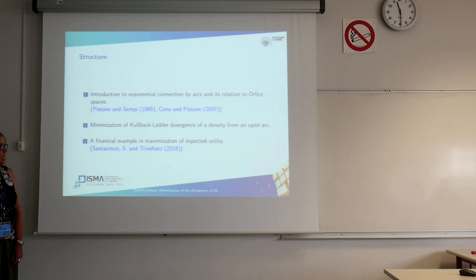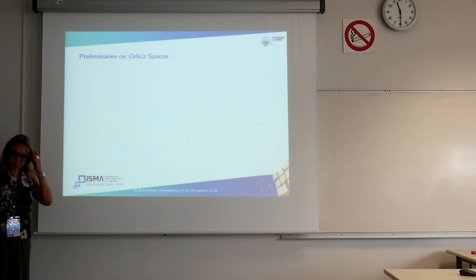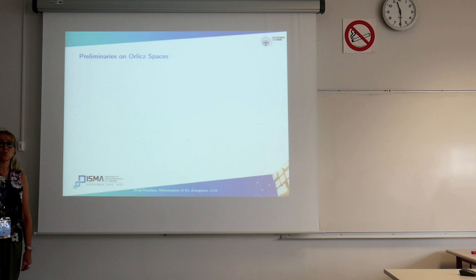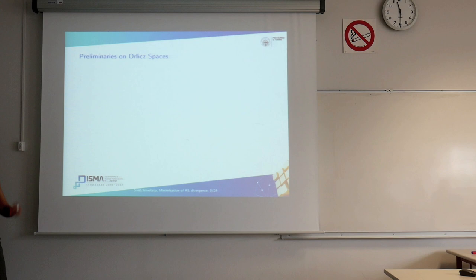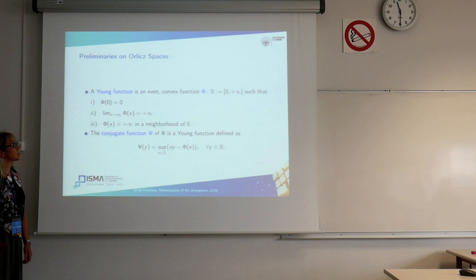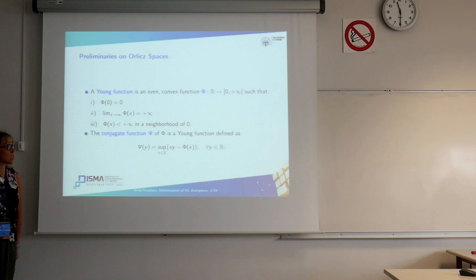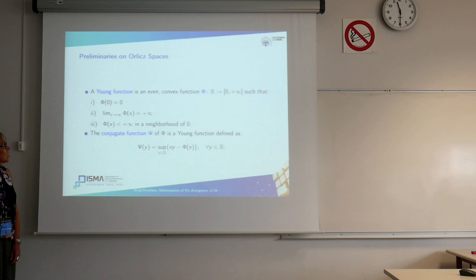So let's start with Orlicz spaces. Orlicz spaces are, in some sense, an extension of the Lebesgue space Lp, where the power function x to the p is replaced by a more general convex function called a Young function. A Young function is an even convex function that starts at zero, has good behavior around zero, and then goes to infinity. We can compute the conjugate function psi of a Young function phi, and this conjugate turns out to also be a Young function.